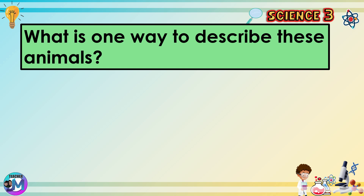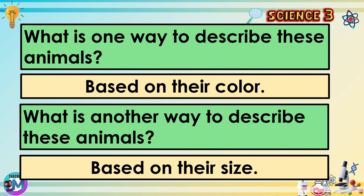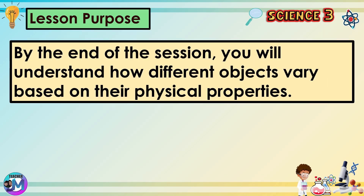What is one way to describe these animals? Based on their color. What is another way to describe these animals? Based on their size. By the end of the session, you will understand how different objects vary based on their physical properties.